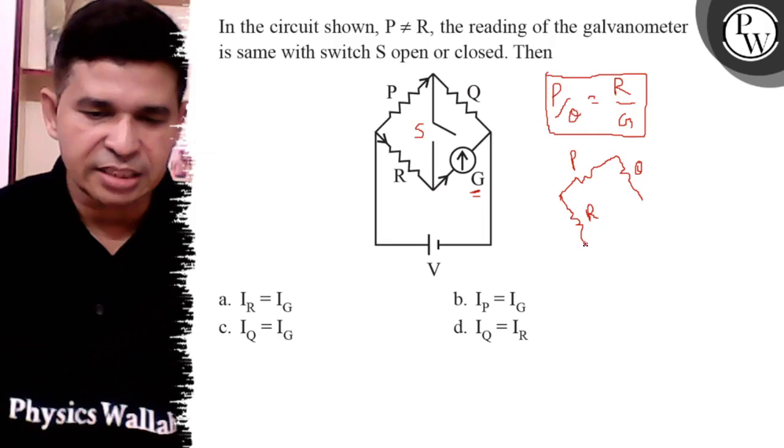Similarly, the resistance R and galvanometer also have the same current.